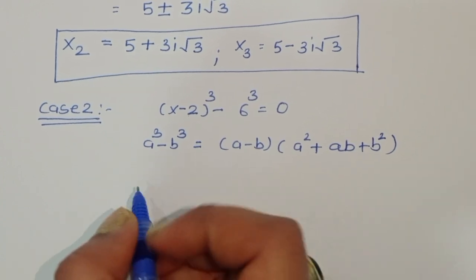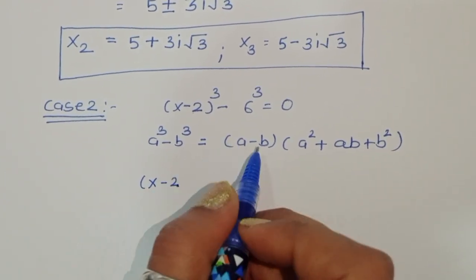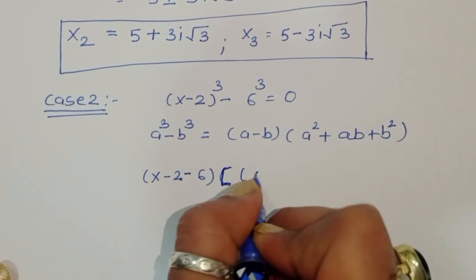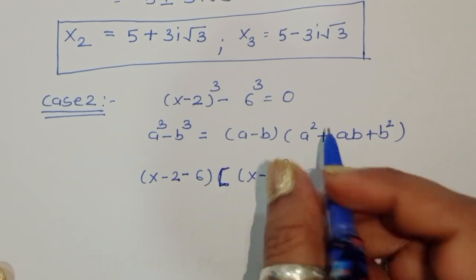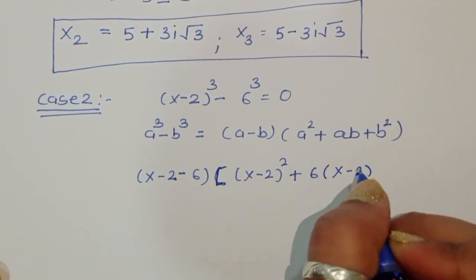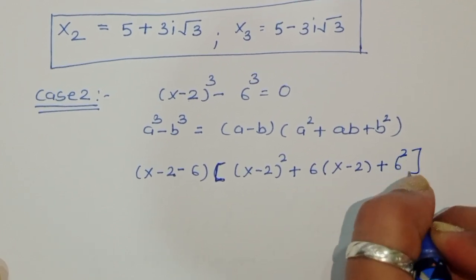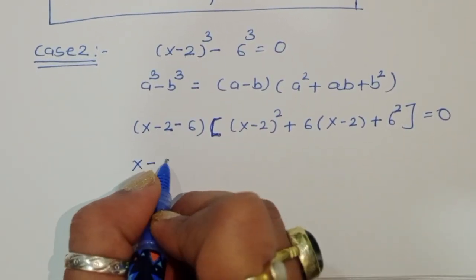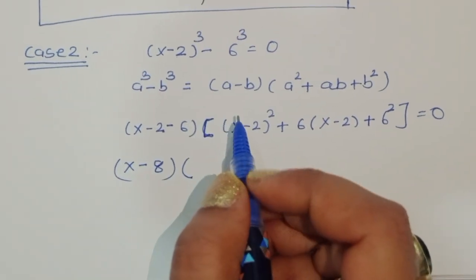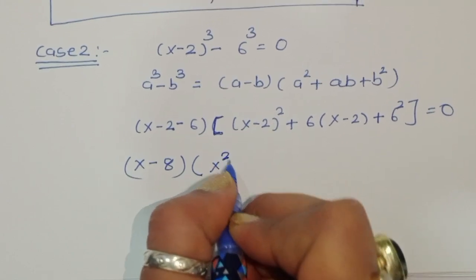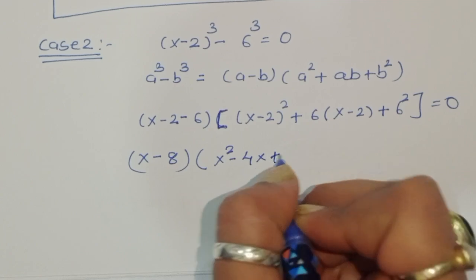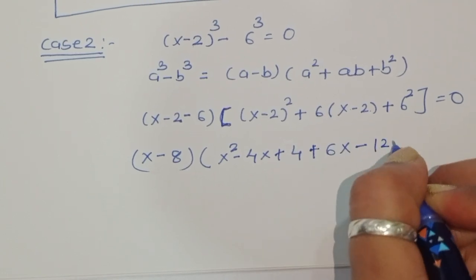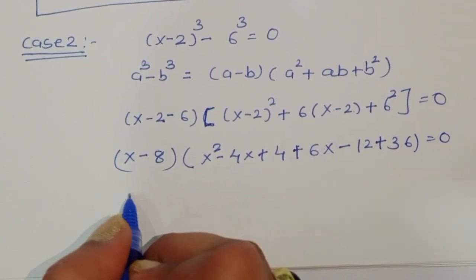Applying the formula: (x minus 2 minus 6) times [(x minus 2)² plus 6(x minus 2) plus 6²] equals 0. Now x minus 2 minus 6 gives x minus 8, and expanding the bracket: (x minus 2)² equals x² minus 4x plus 4, plus 6(x minus 2) equals 6x minus 12, plus 36 equals 0.